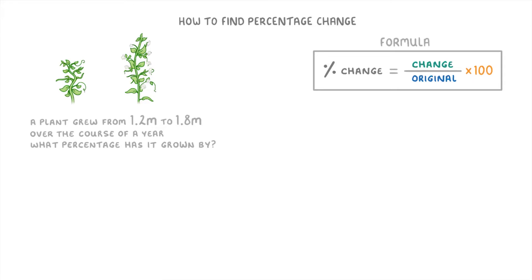Well, this time we're not actually told what the change is. We're just told that the height changes from 1.2 to 1.8. So we're going to have to calculate the change for ourselves by doing 1.8 minus 1.2, to get a change of 0.6m.